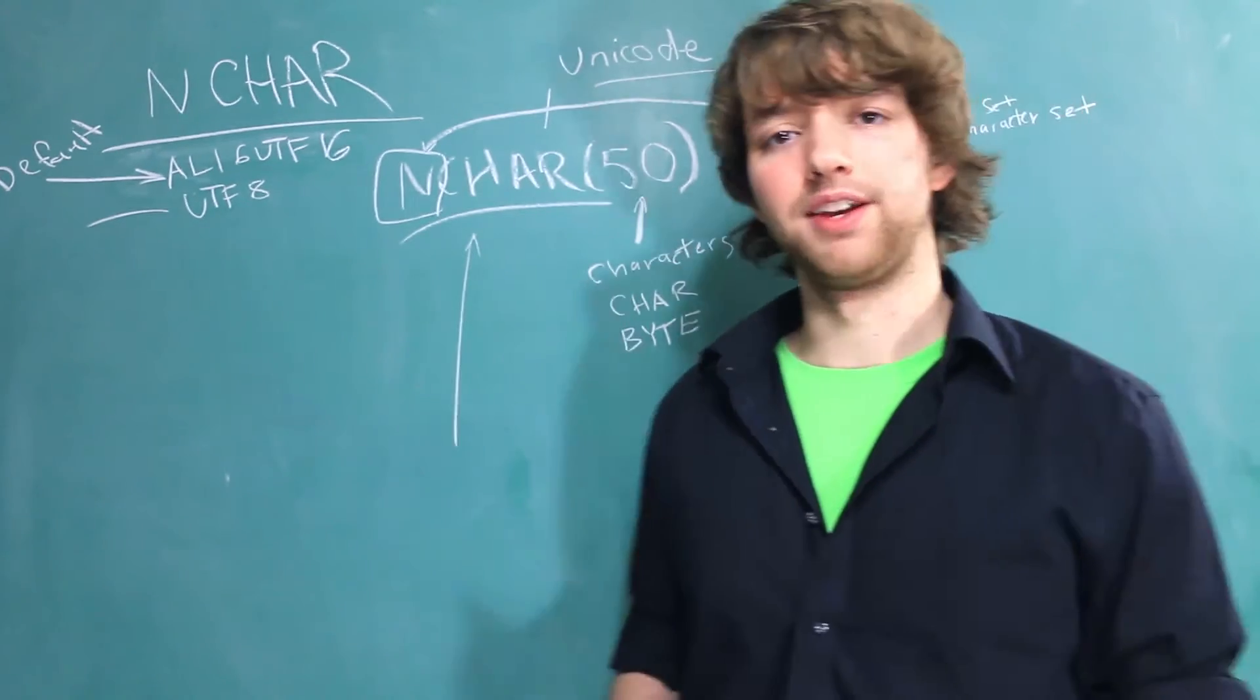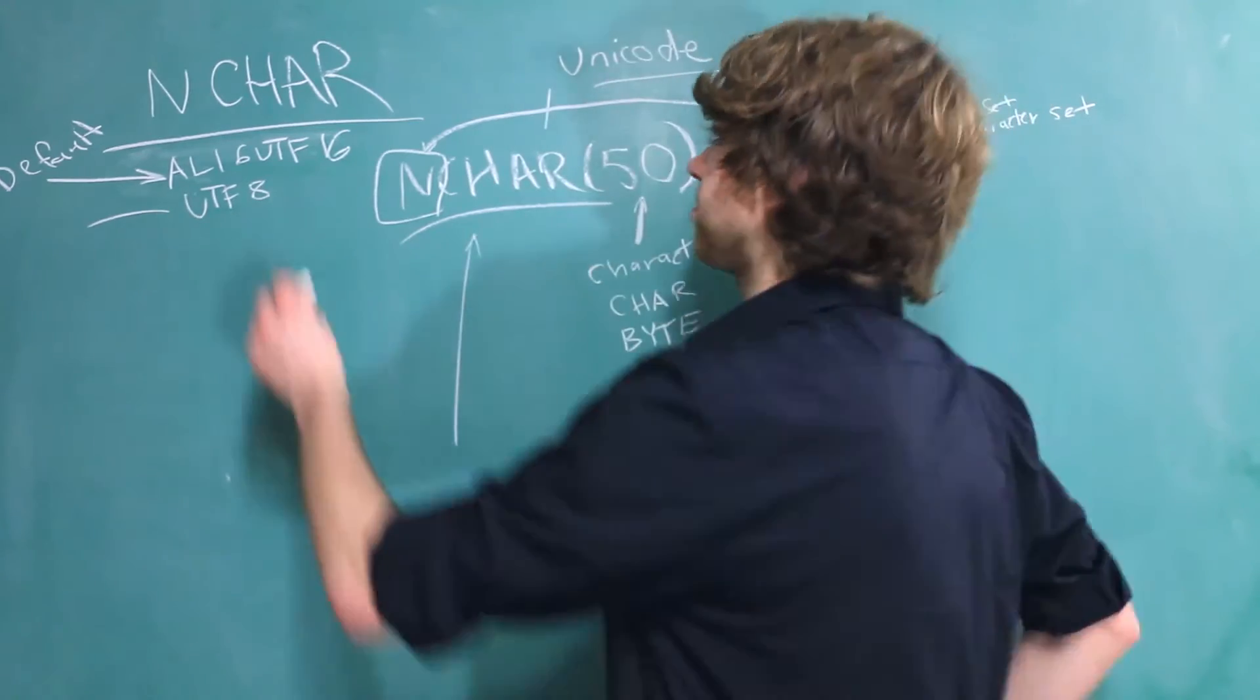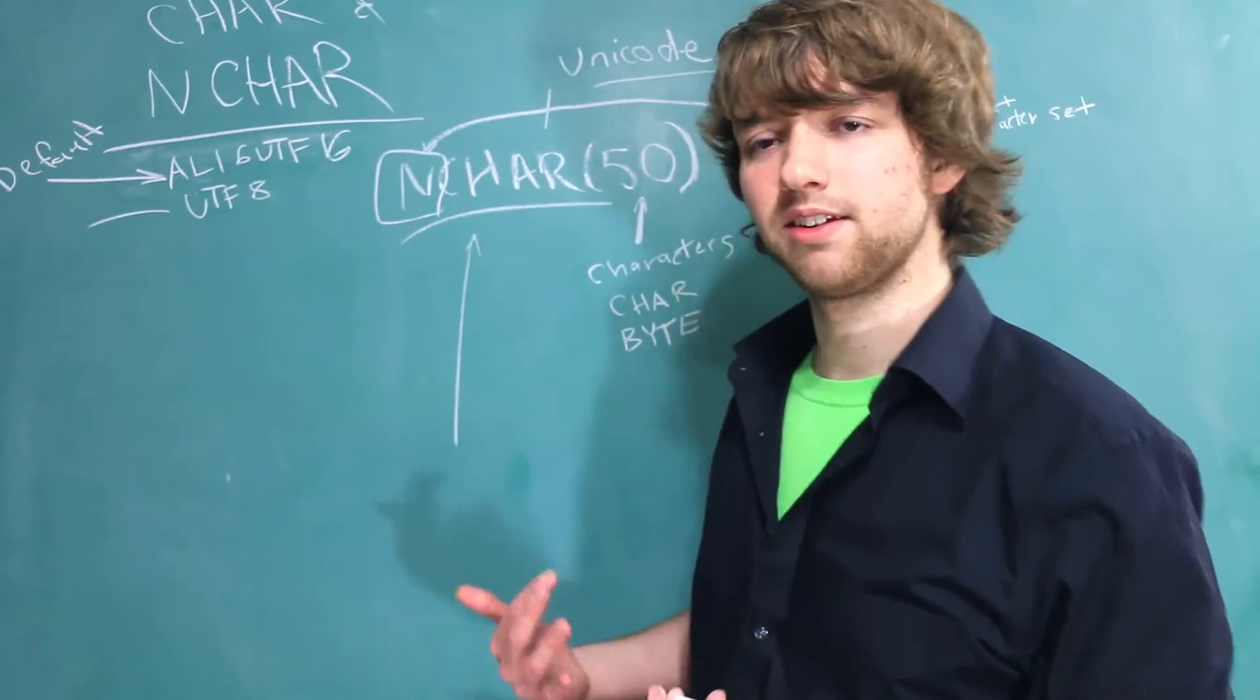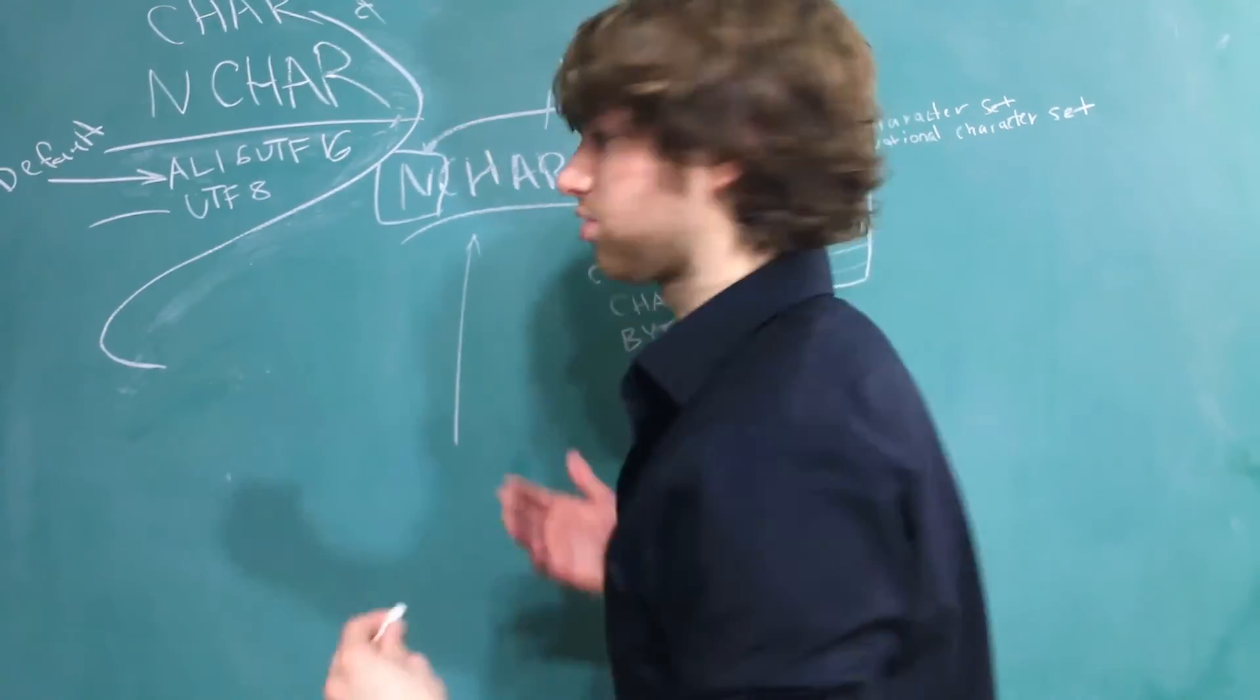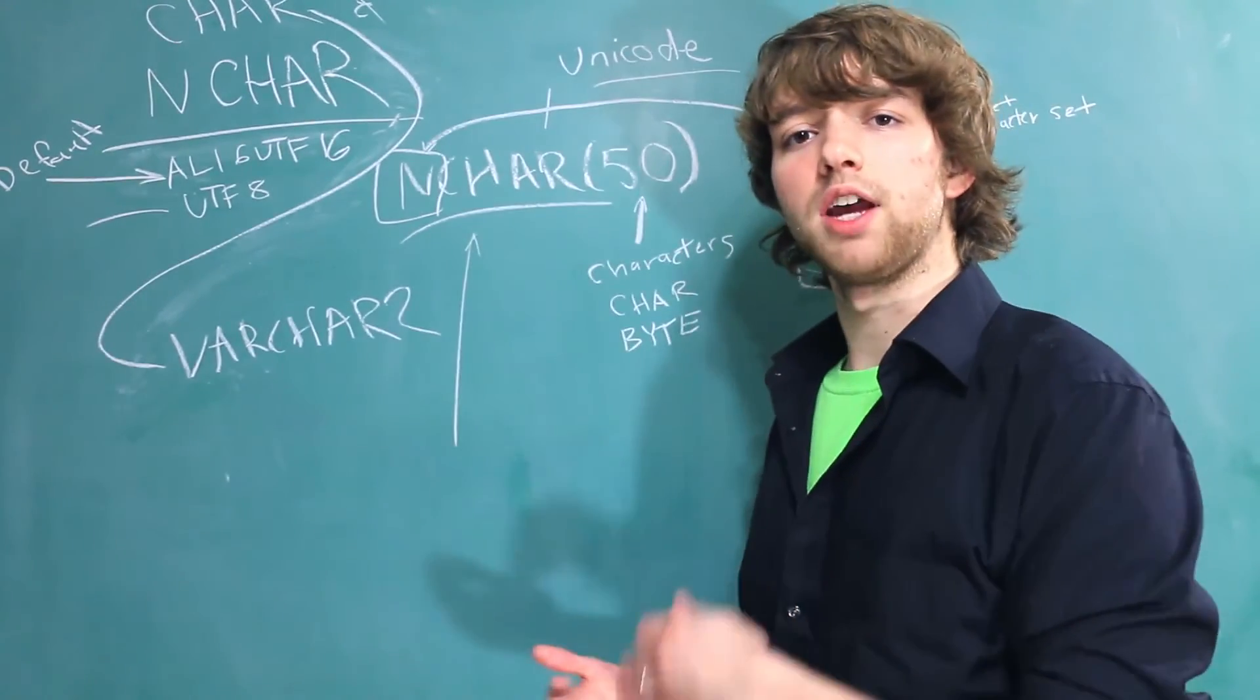Now in a previous video I mentioned that the char and n char data types are sometimes not recommended for use. Why is that? And the reason is for example char, it's actually just stored as a varchar 2 with padding. There's not an underlying difference.